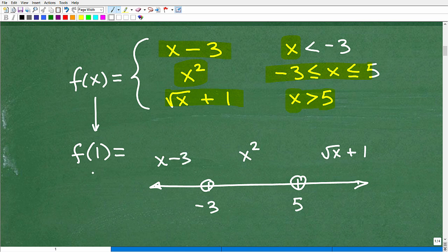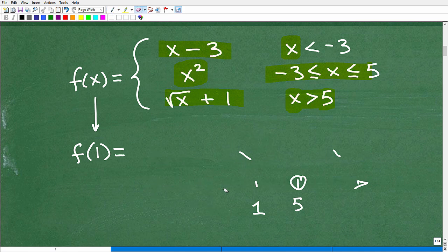we're trying to find f of 1 and 1 falls in this interval right here. So I'm going to be doing the x squared rule. All right. So knowing that, let me go erase this. Effectively, for f of 1, you're basically doing this function. f of x is equal to x squared.